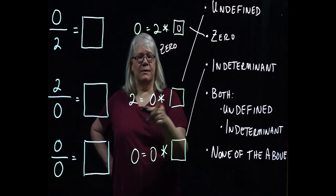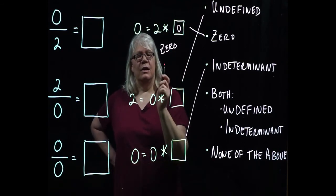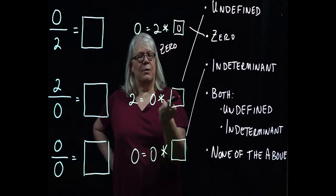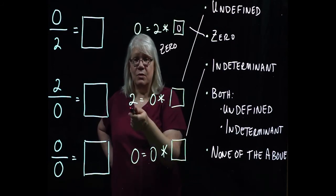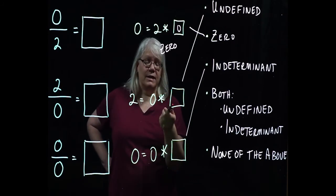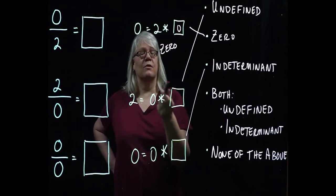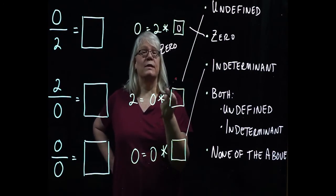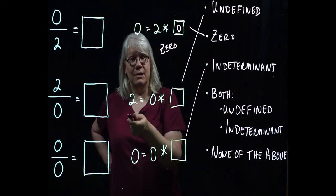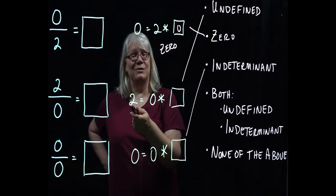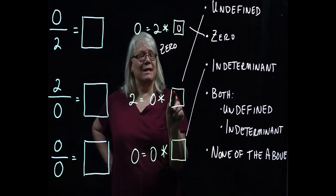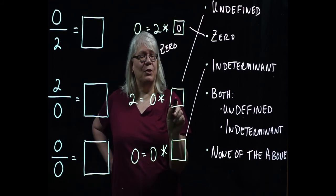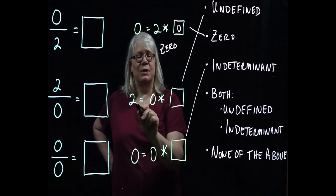Now this one here, I said undefined. So let's think about this. What number times zero is going to give me two? Well, if we have a decent understanding of zero, we know that zero times any number will always give me what? Zero. In this case, I get two.